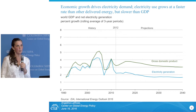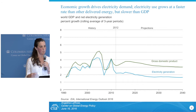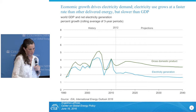Going forward, we're seeing GDP growth at 3.3% and electricity growth at 1.9%, compared to historical GDP growth of 3.7% and electricity closely behind at 3.2%. So if we held the same relationship going forward, clearly electricity consumption would be much higher.